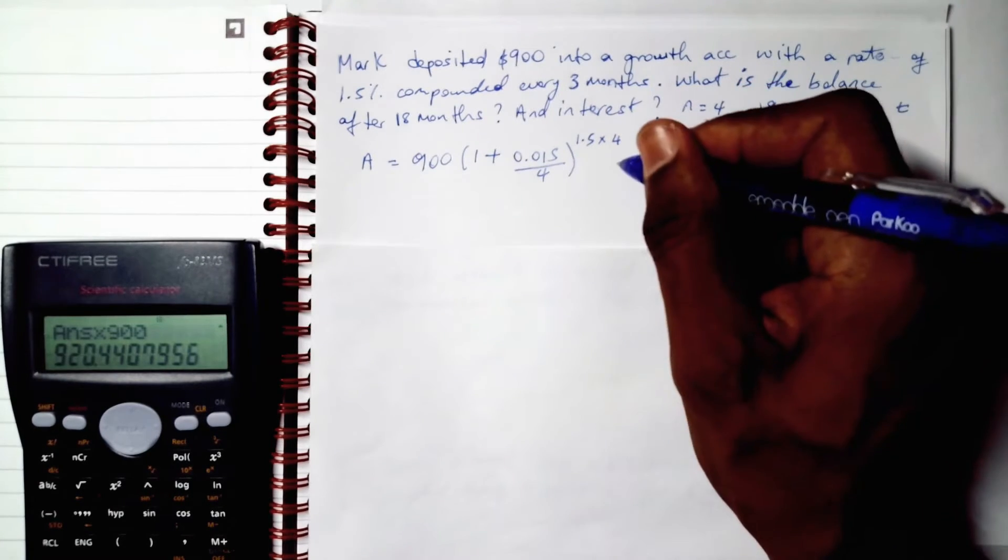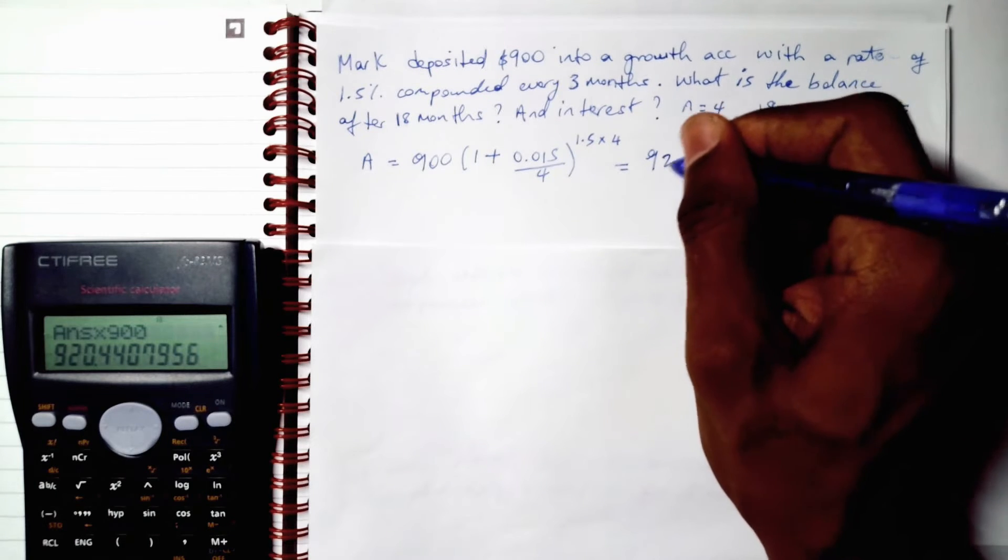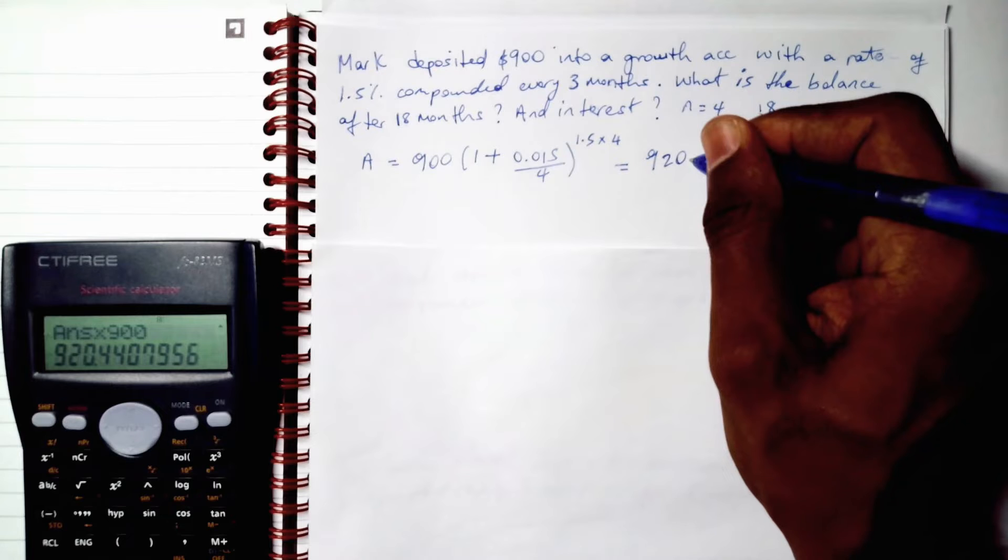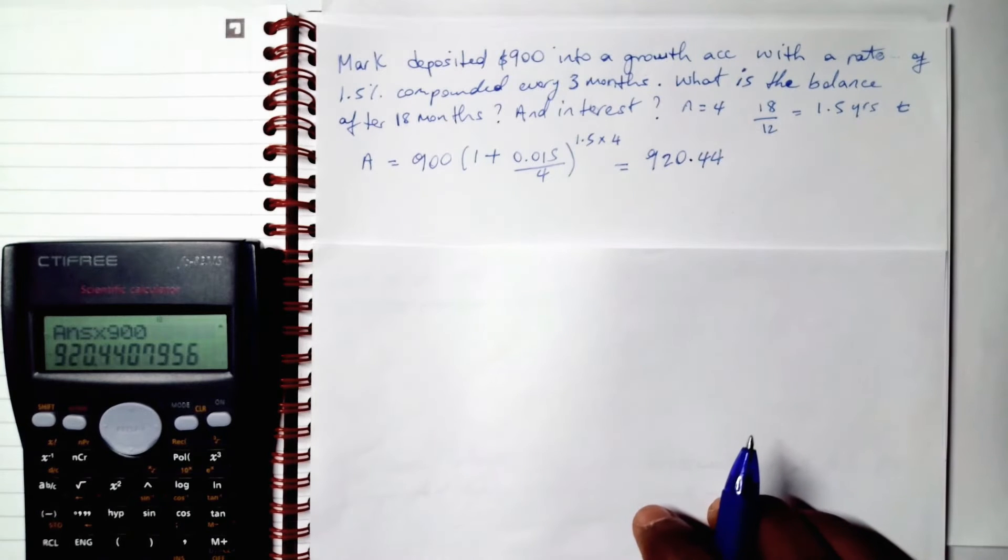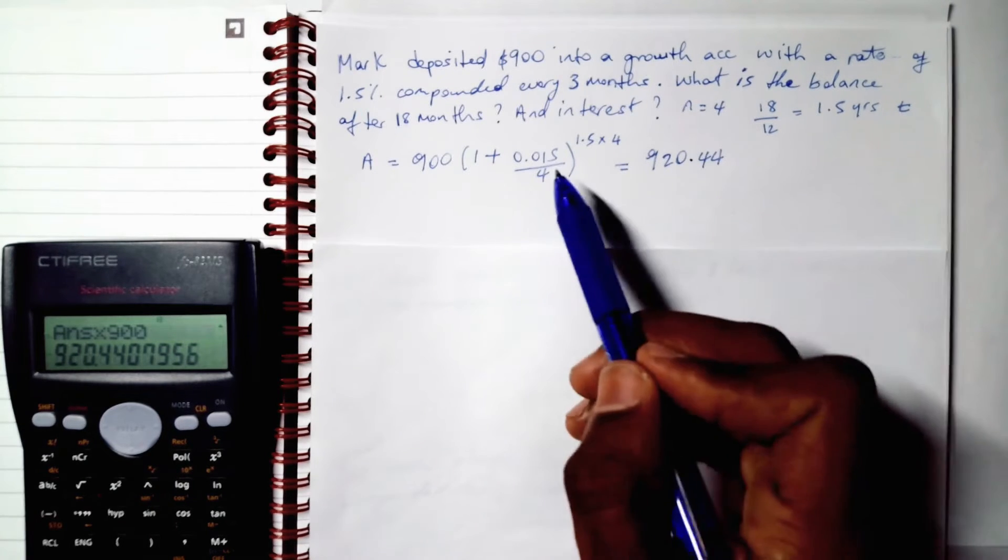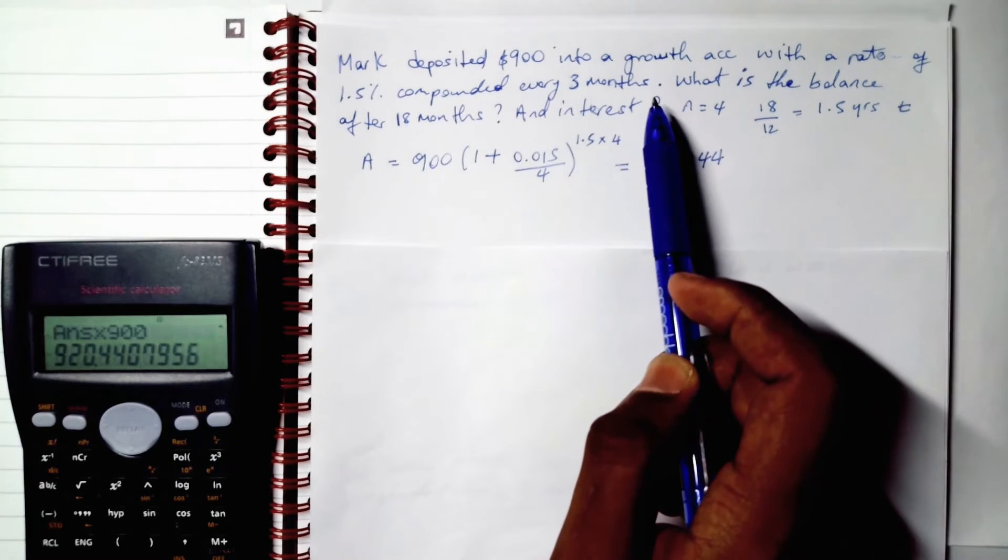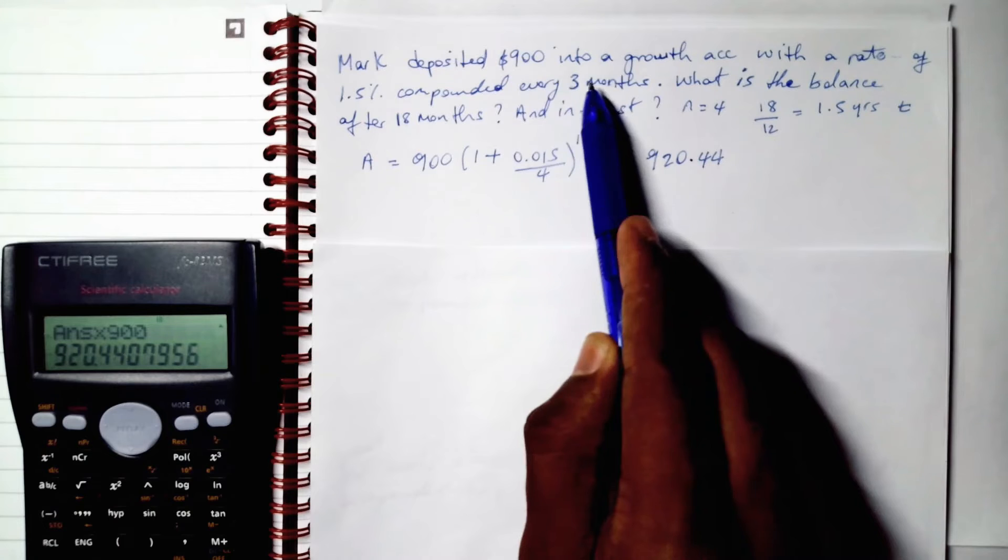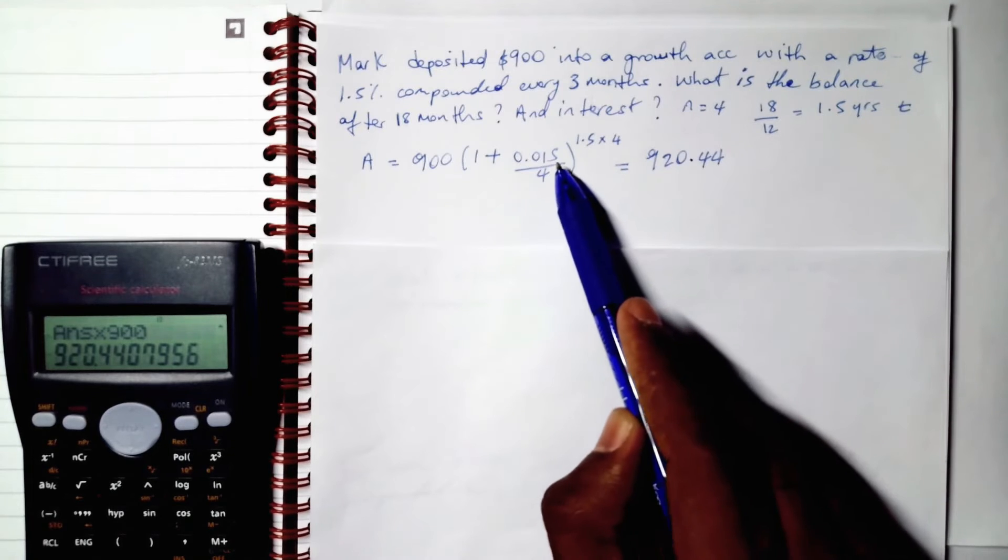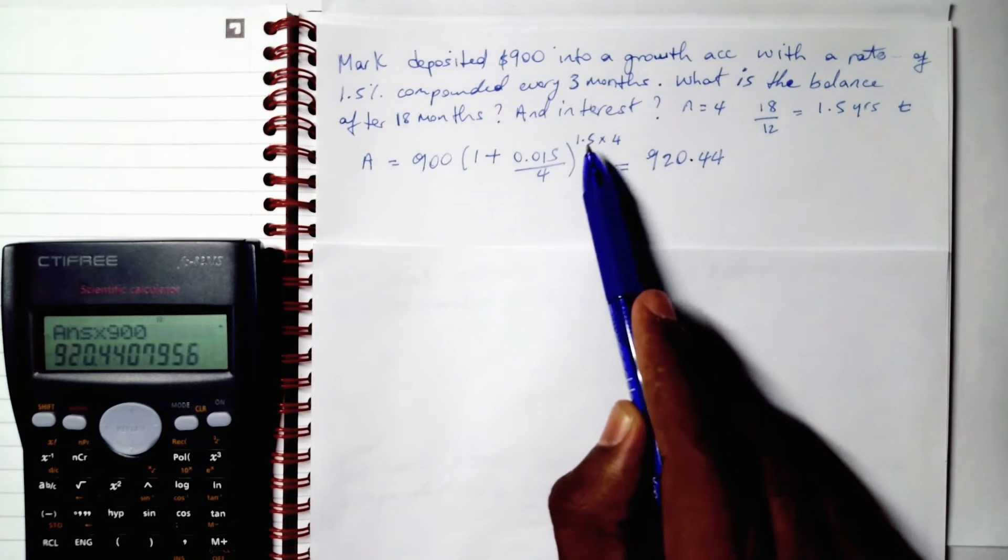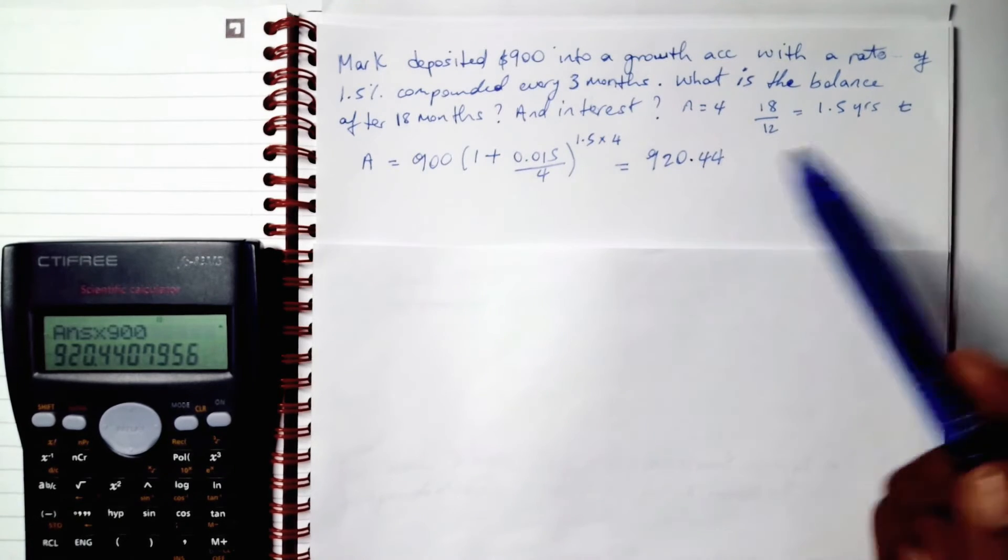So this is our 900 compounded for 18 months. All right. So our N is 4 because it is compounded 4 times for the year because it compounds every 3 months. That means it compounds 4 times for the year. So our N is 4. Our T is 1.5 because we converted our months to years here. And our principal is 900.